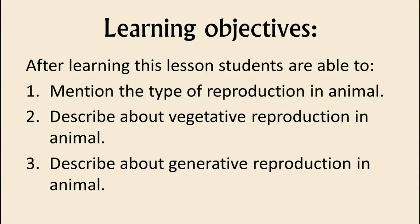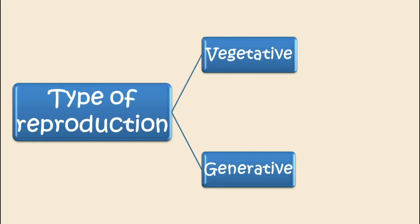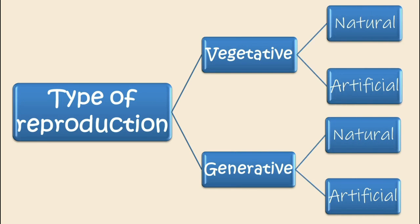These are our learning objectives. There are two types of reproduction in animals: vegetative and generative. Each type consists of natural and artificial.